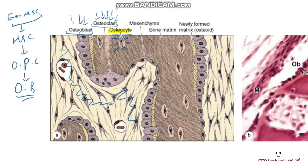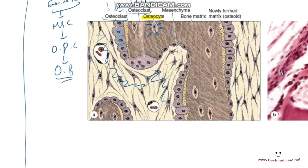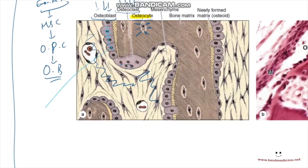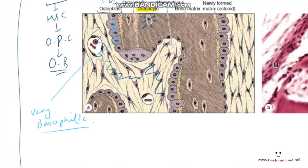These osteoblasts are seen in a simple cuboidal layer as shown in the diagram. A key histological feature is that the osteoblast is very densely stained and very basophilic, because it is secretory in nature.